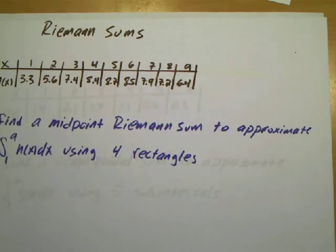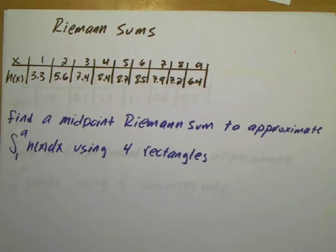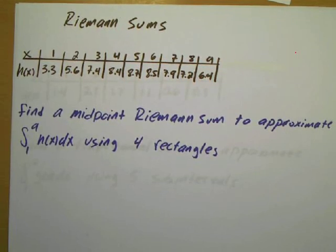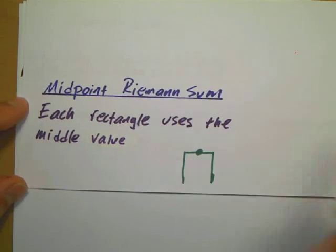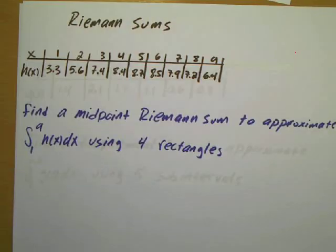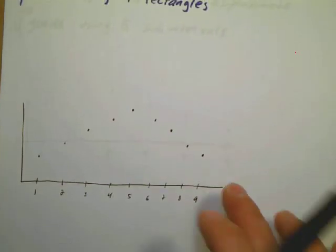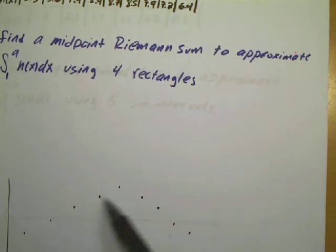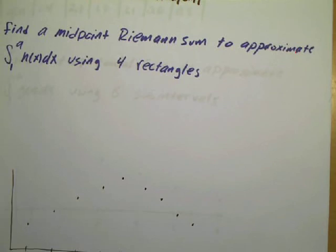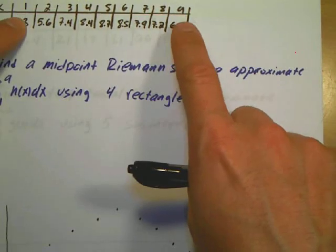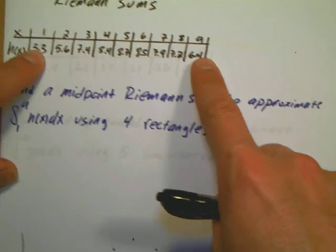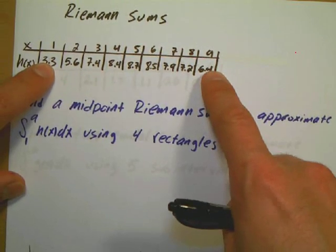The first definition we'll go over deals with this example — go ahead and pause and copy it down. For a midpoint, you use a rectangle at the middle value. I've drawn out the data, looking at where the function is increasing and decreasing. Since I'm using four rectangles from one to nine, if I split this up into four parts, I'm going to be counting by two.